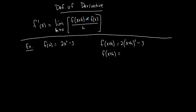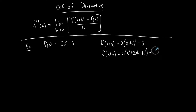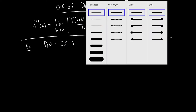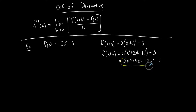This is only one portion of the definition — I'm going to find this part first and then plug it into the whole thing. x plus h squared expands to x squared plus 2xh plus h squared, minus 3. Then distributing the 2 gives 2x squared plus 4xh plus 2h squared minus 3. This is my f of x plus h.